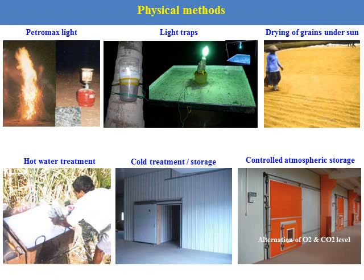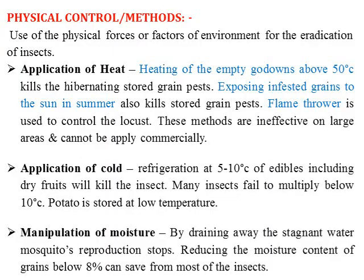Physical methods involve the use of light, temperature, or moisture for pest management. Petromax light burned during the night, or burning of fire, repels insect attack. Light traps can also be implemented. Drying of grains under the sun is one method to remove moisture. Hot water treatment, cold water, cold storage, and controlled atmospheric storage with a definite level of oxygen and carbon dioxide are important physical methods for pest control. Application of heat — heating empty godowns above 50 degrees Celsius kills hibernating stored-grain pests. Exposing infested grains to the sun in summer also kills stored pests. A flame is also used for the control of locusts.